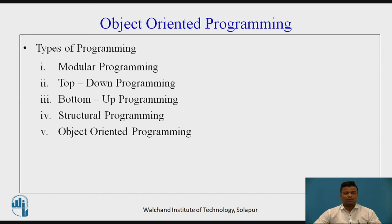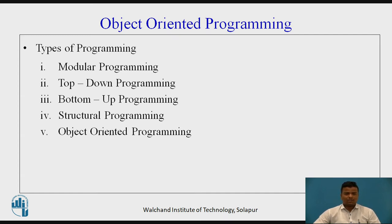What is meant by object-oriented programming? First of all, we will see the different types of programming. There are different types like modular programming, top-down programming, bottom-up programming, structural programming, and object-oriented programming. Structural programming consists of C and C++ and is the simplest type. We can get output using structural programming for different code, but only for simple programs.